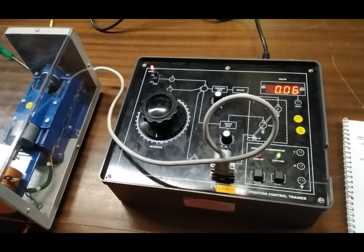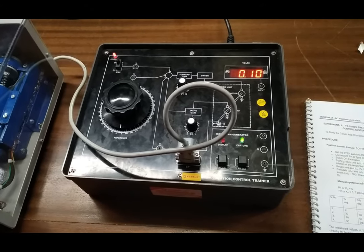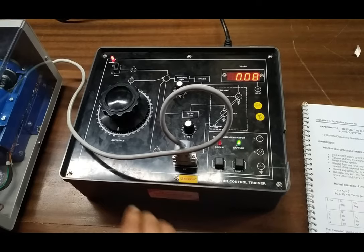Our second experiment is to study the closed-loop characteristics in the DC position control system. We are taking readings of theta r, which is this angle.